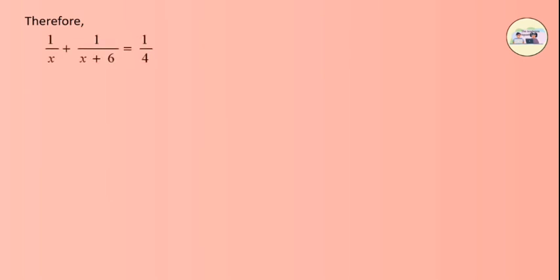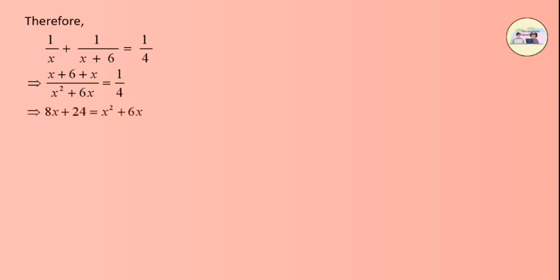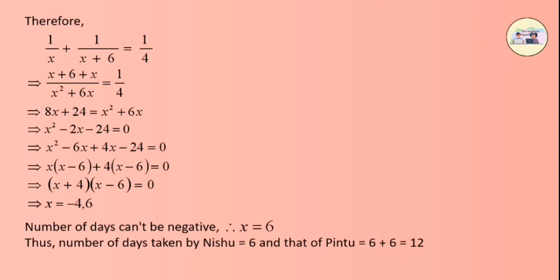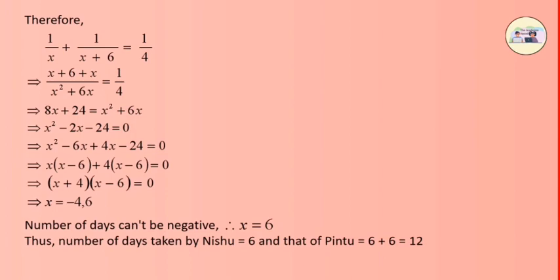Therefore: 1/x + 1/(x + 6) = 1/4. Solving the left-hand side by cross multiplication gives (x + 6 + x) / (x² + 6x) = 1/4. Cross multiplying: 4(2x + 6) = x² + 6x, giving 8x + 24 = x² + 6x. Solving this quadratic equation gives x = −4 or x = 6. Since number of days cannot be negative, x = 6. Thus Nishu takes 6 days and Pintu takes 6 + 6 = 12 days.